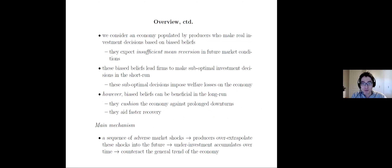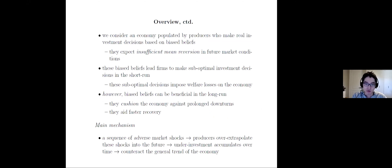We consider an economy populated with producers from the supply side who make real investment decisions based on biased beliefs. These people have extrapolative expectations — what we call insufficient mean reversion in future market conditions. For example, after COVID-19, many people may be too pessimistic, thinking that recovery will not happen for a long time. That's the notion of insufficient mean reversion we're trying to capture.